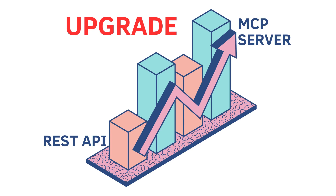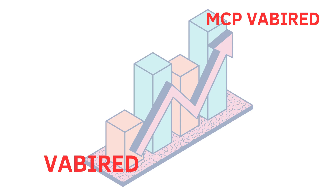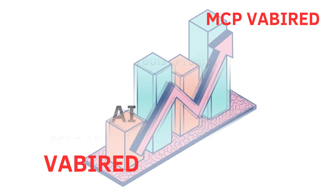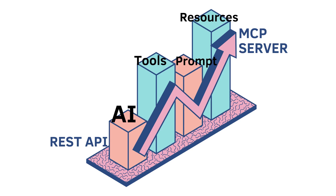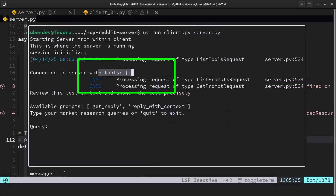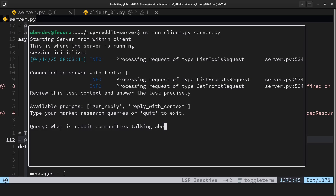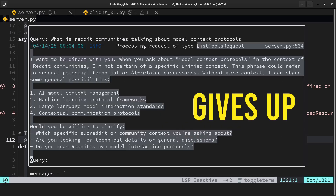The first step to mastering MCP servers is to upgrade your existing REST API. I'll show you how I took Vabored, my Reddit-powered market research tool, and turned it into an AI-powered MCP server using resources, prompts, and tools. First, we'll see how a plain AI model fails without Reddit tools access, gives vague answers, and gives up.